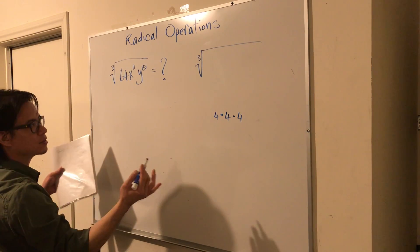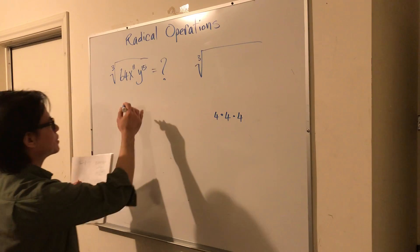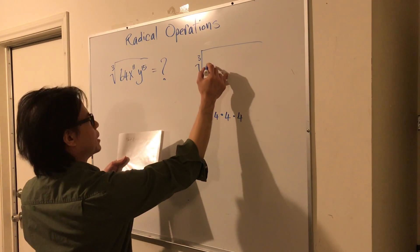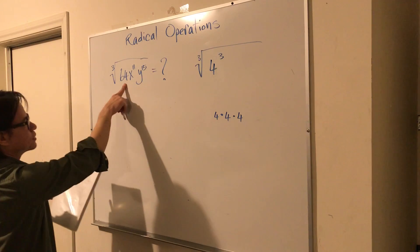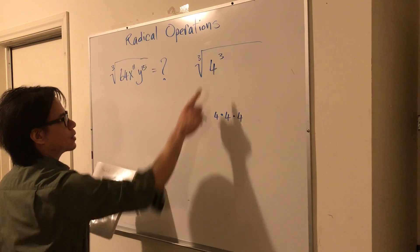That's just intuition. And if you work with these numbers enough, you would be able to see it more quickly. So you can write the 64 as 4 to the third power.